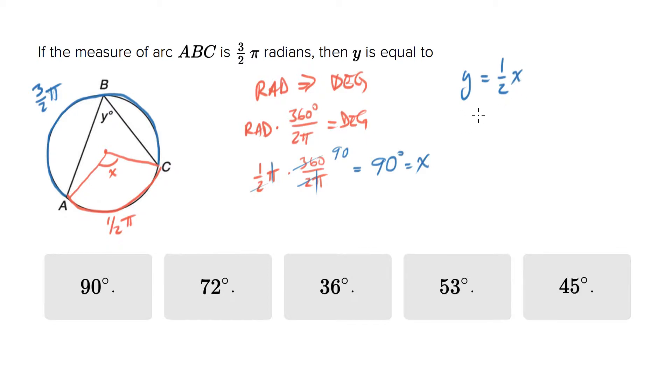So if X is 90, then Y will equal one half of 90, which means that 45 is your answer.